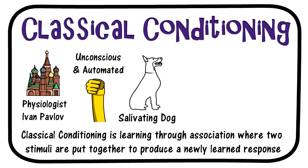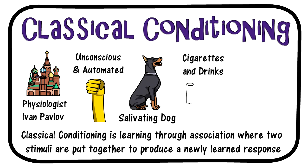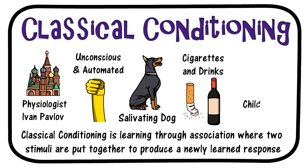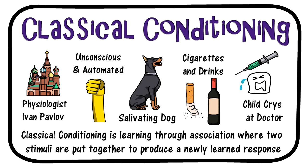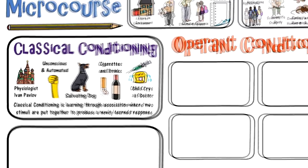First the dogs salivated just in the presence of the food. Then Pavlov sounded the bell every time the food was given. Then the dogs began to salivate just at the sound of the bell, even though there was no food present. Another example of classical conditioning is the association or pairing of smoking with alcohol. Many people drink and smoke at parties or social gatherings, and eventually the two stimuli are paired together. Another example: my daughter remembers the painful shots at the doctor's office from previous visits, so now every time she goes to the doctor she cries because she associates the pain of the needle with the doctor's office.